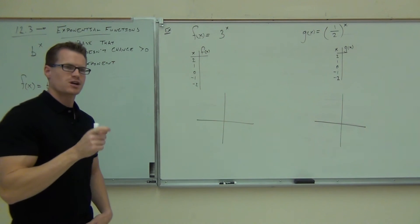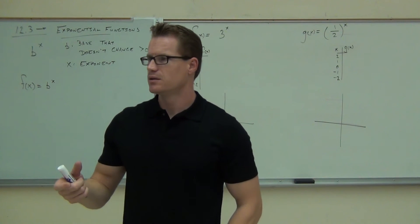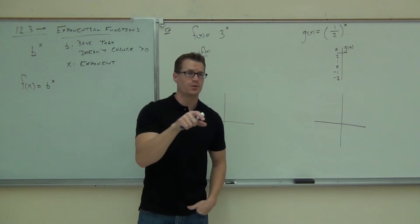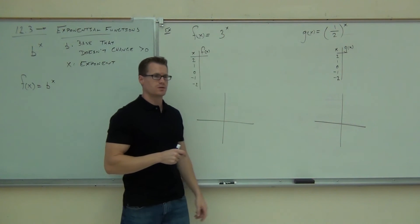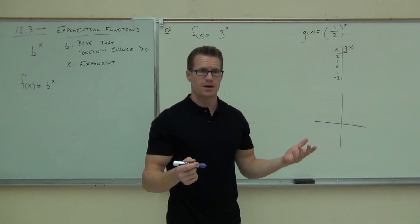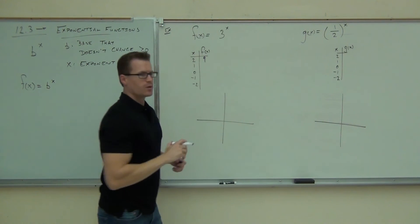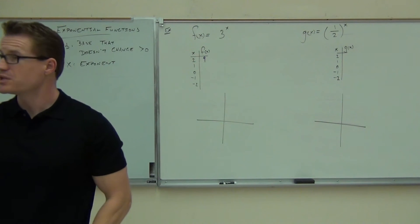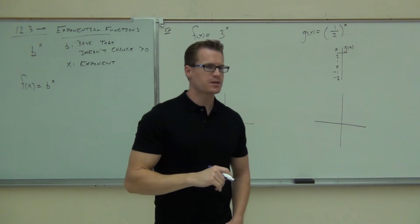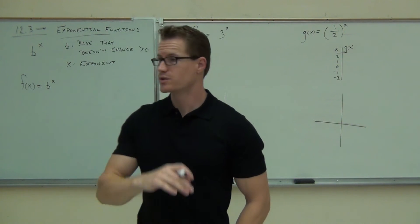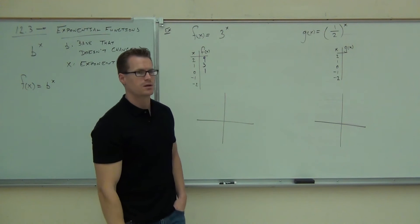If my variable takes the value of two, I plug in two. How much will it be? It's going to be nine — three squared is nine. How about one? That's three to the first power, which is three. How about zero? Three to the zero — anything to the zero power gives you one. That's interesting.